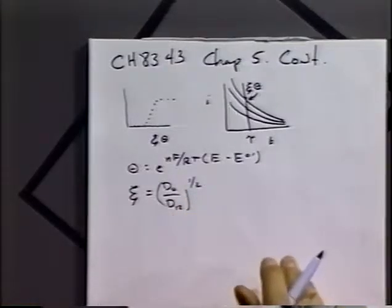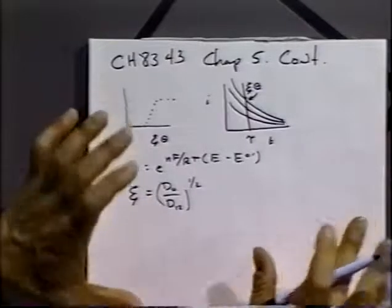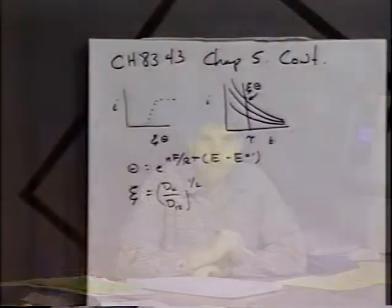The plot would be e theta. And remember, we defined theta as equal to e to the nf over rt, e minus e zero prime. And the squiggly e was the ratio of diffusion coefficients to the square root power. Usually we're assuming that the diffusion coefficients are pretty close to 1. Under those conditions, we get the sampled current voltammogram which for any particular tau would be appropriate.